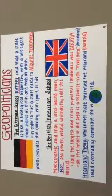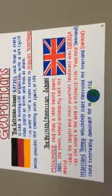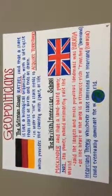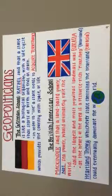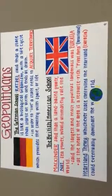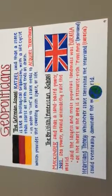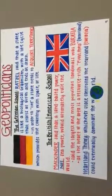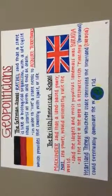Geopoliticians include Ratzel of the German school, who came up with the organic state theory, which states that territory is like food for a state — it fuels the progression of the state. And then Mackinder of the British school, who came up with the heartland theory, based on the idea that Eurasia is the center of the world, and whoever controls it will control the rest of the world.